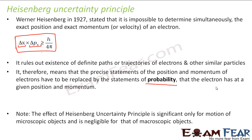Right now we are talking about atomic structures, so we are dealing with microscopic objects. In this case, the Heisenberg uncertainty principle plays a significant role. This is how Bohr's theorem was contradicted by Heisenberg's uncertainty principle.